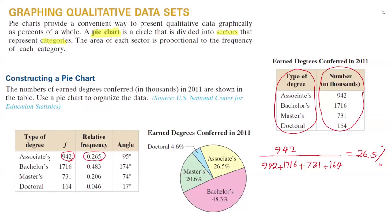For bachelor's, the frequency is 1716. So you do the exact same thing: 1716 divided by 942 plus 1716 plus 731 plus 164, which is 48.3 percent.